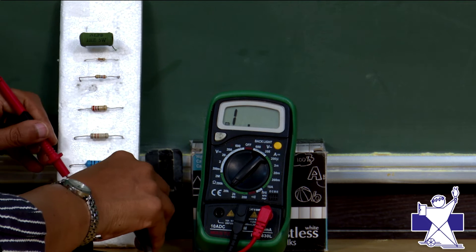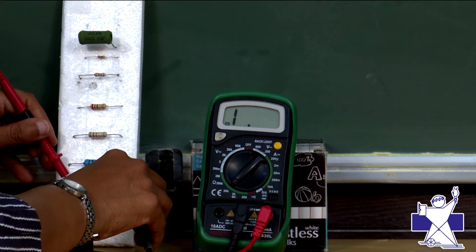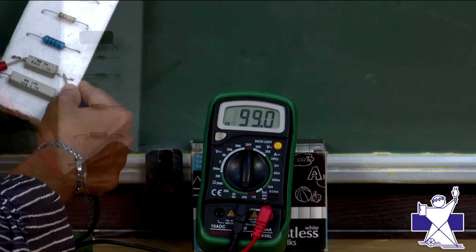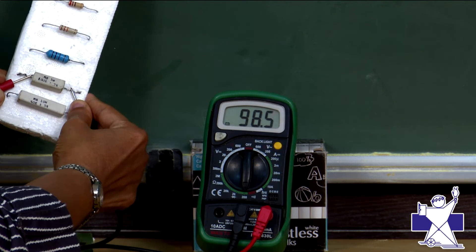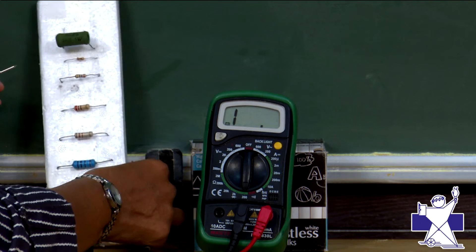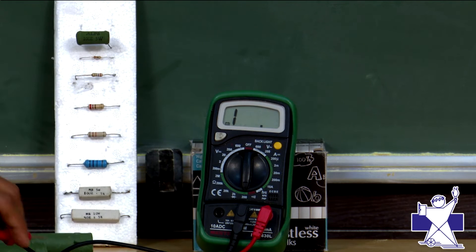Here also see, you can measure the resistance. Now again it is out of range or something is there. Just changing the range and yes. Here it is. It is around 100 ohms. Now, I would like to tell you one more thing.